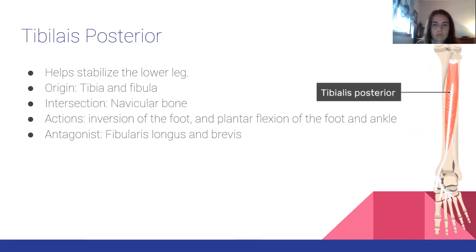The tibialis posterior helps stabilize the lower leg. Origin: tibia and fibula. Insertion: navicular bone. Action: inversion of the foot and plantar flexion of the ankle. Antagonist: fibularis longus and brevis.